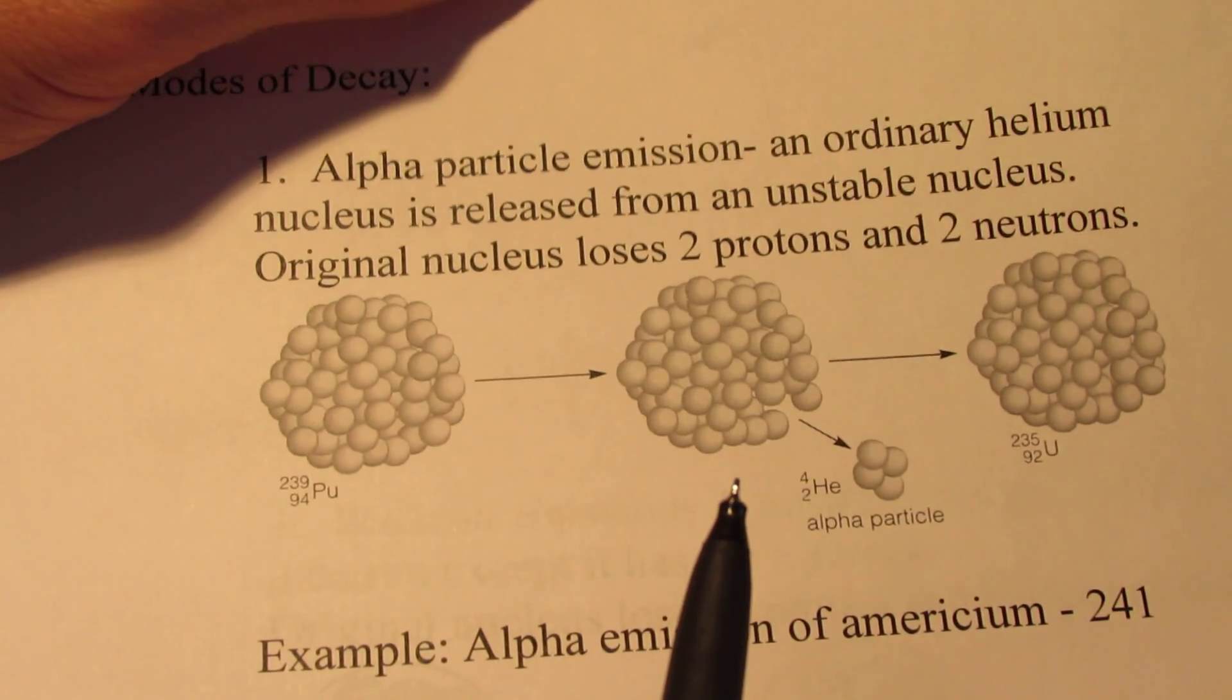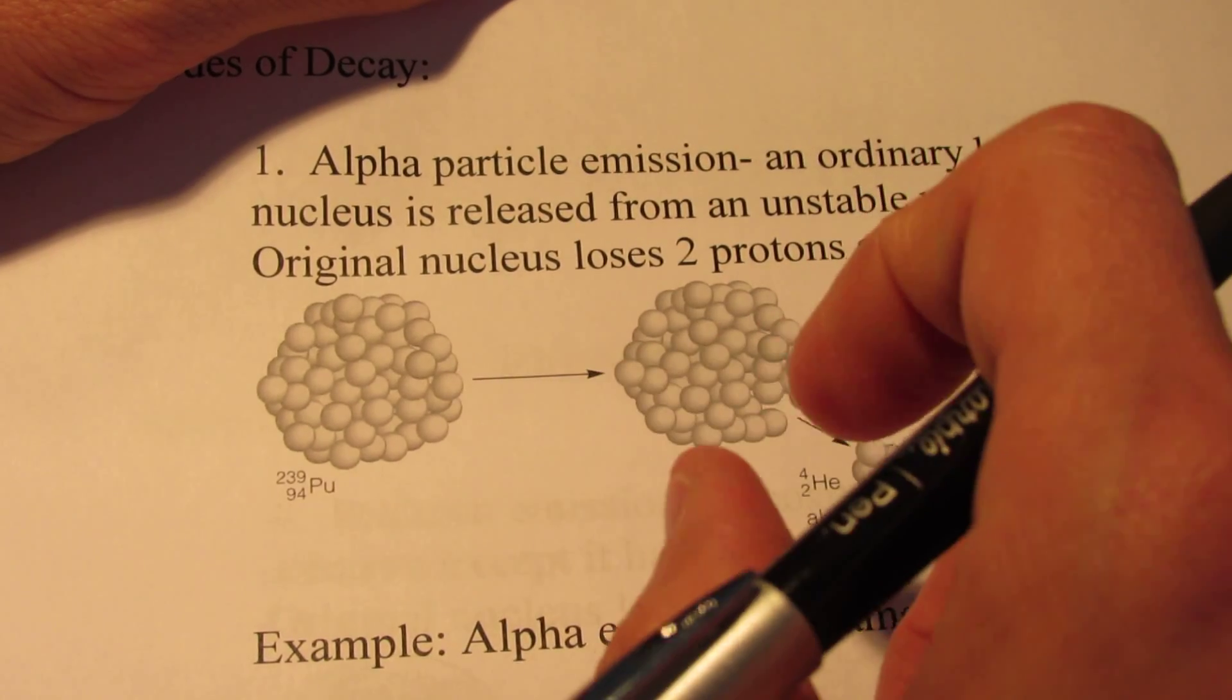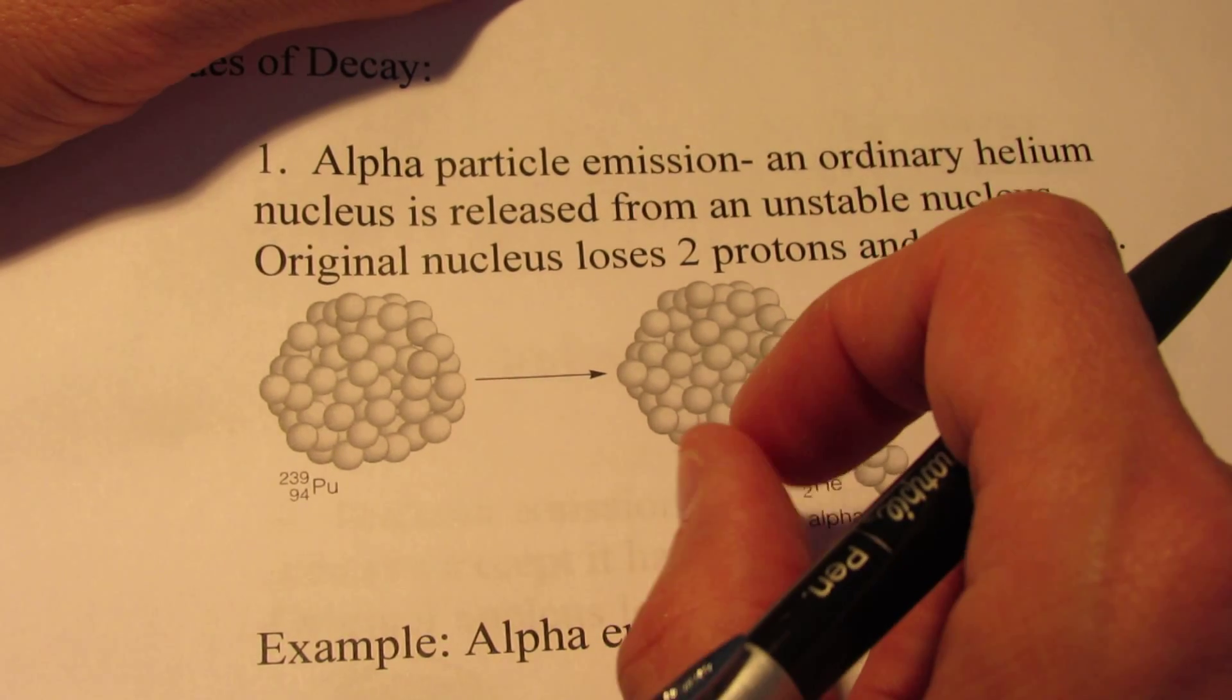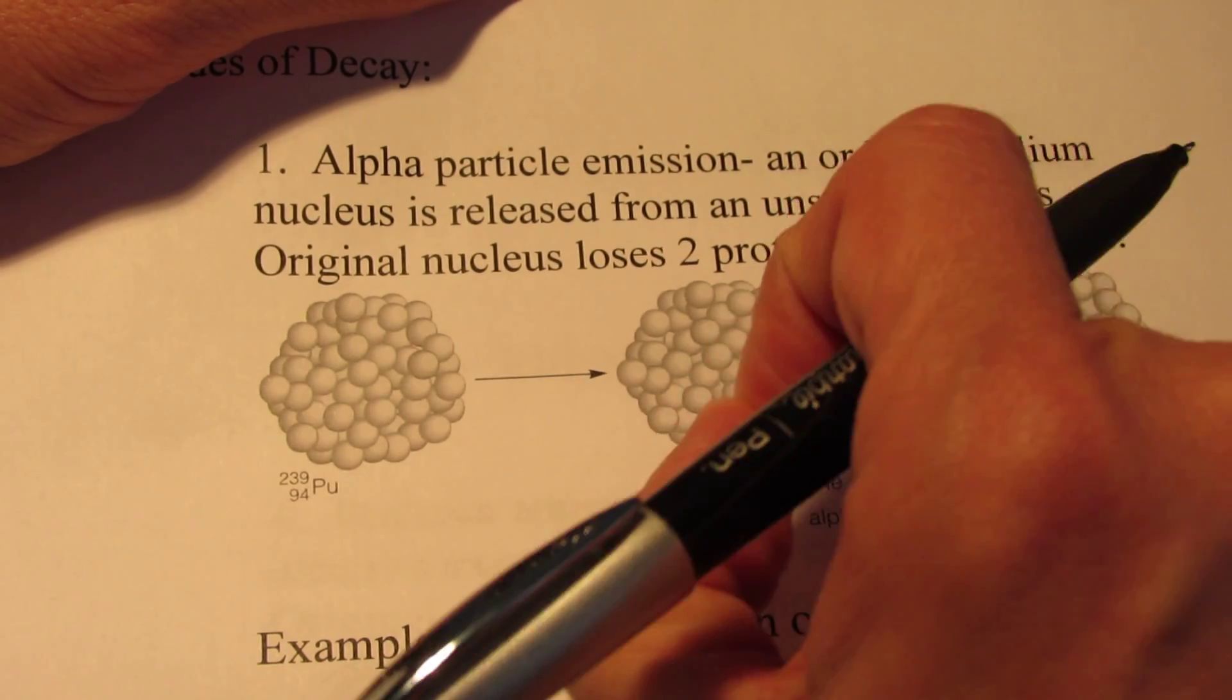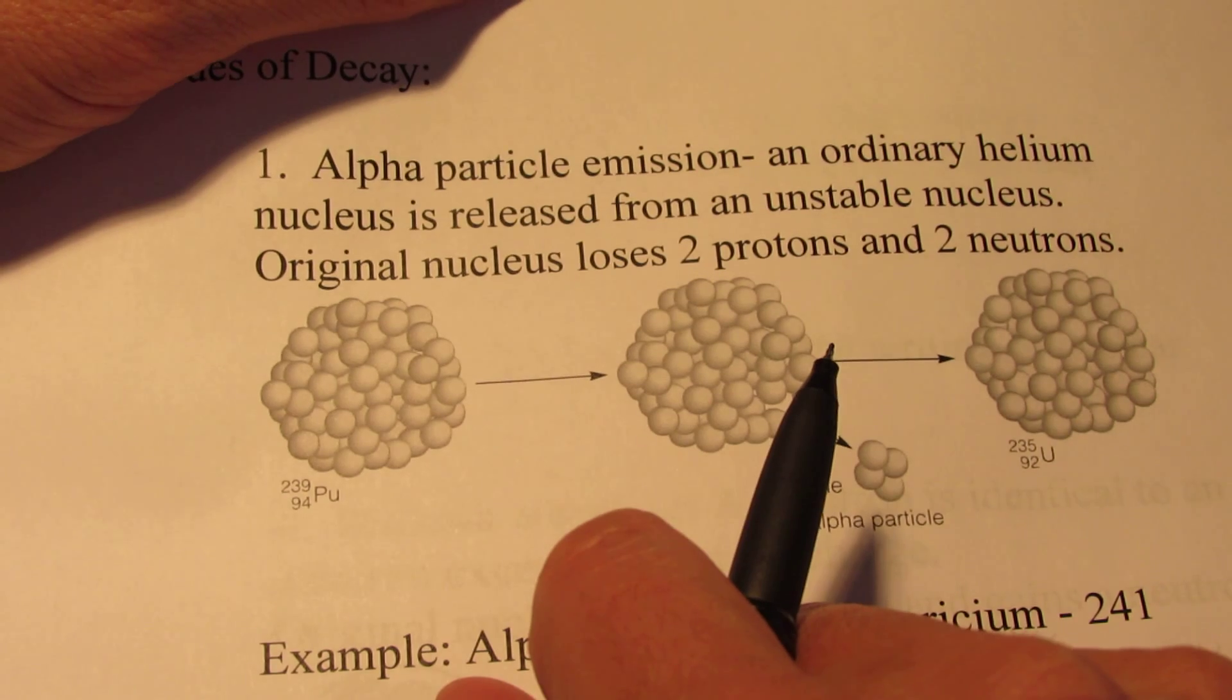Now there are neutrons in the nucleus as well, but they're neutrally charged. They're not going to help much as far as binding those protons together. So there's some type of force in the nucleus that holds those positively charged particles really close together. Einstein called it the strong force.